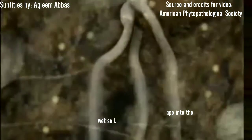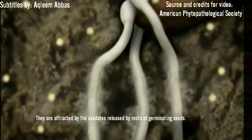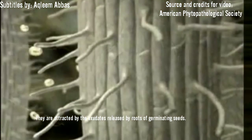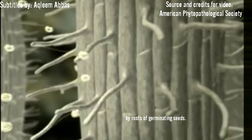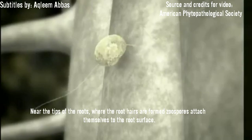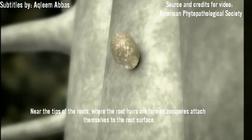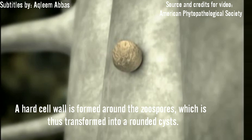They are attracted by the exudates released from the roots of the germinating seed. Near the tips of the roots, where the root hairs are formed, the zoospores attach themselves to the root surface. A hard cell wall is formed around the zoospore, which is thus transformed into a roundish cyst.